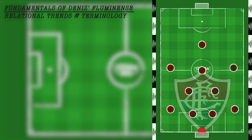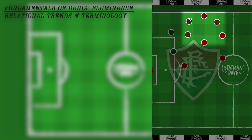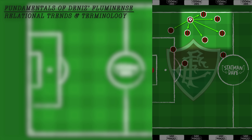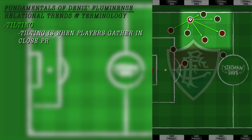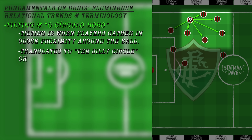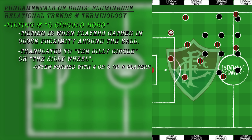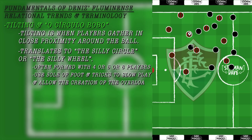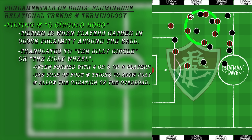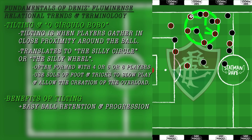In possession, Fluminense look to flood the area around the ball, giving the player on the ball lots of short-passing options. This is often referred to as tilting, and in Diniz's tactics we usually see the creation of O Círculo Bobo, which translates to the silly circle. Frequently formed by four, five or six players, Fluminense resemble classic street footballers in these moments. The sole of the foot, tricks and skills are used to slow the tempo of the play, giving time for the circle to form as players move into position. The key concept is that the ball can quickly be recycled within the circle with short passing.